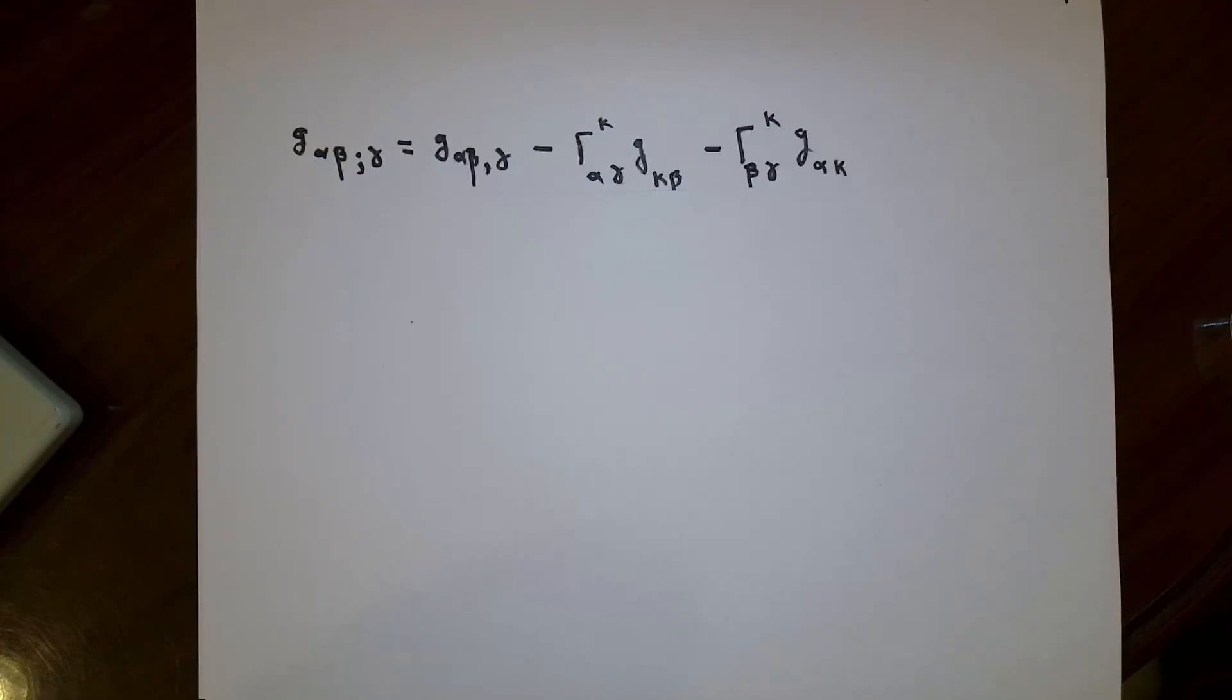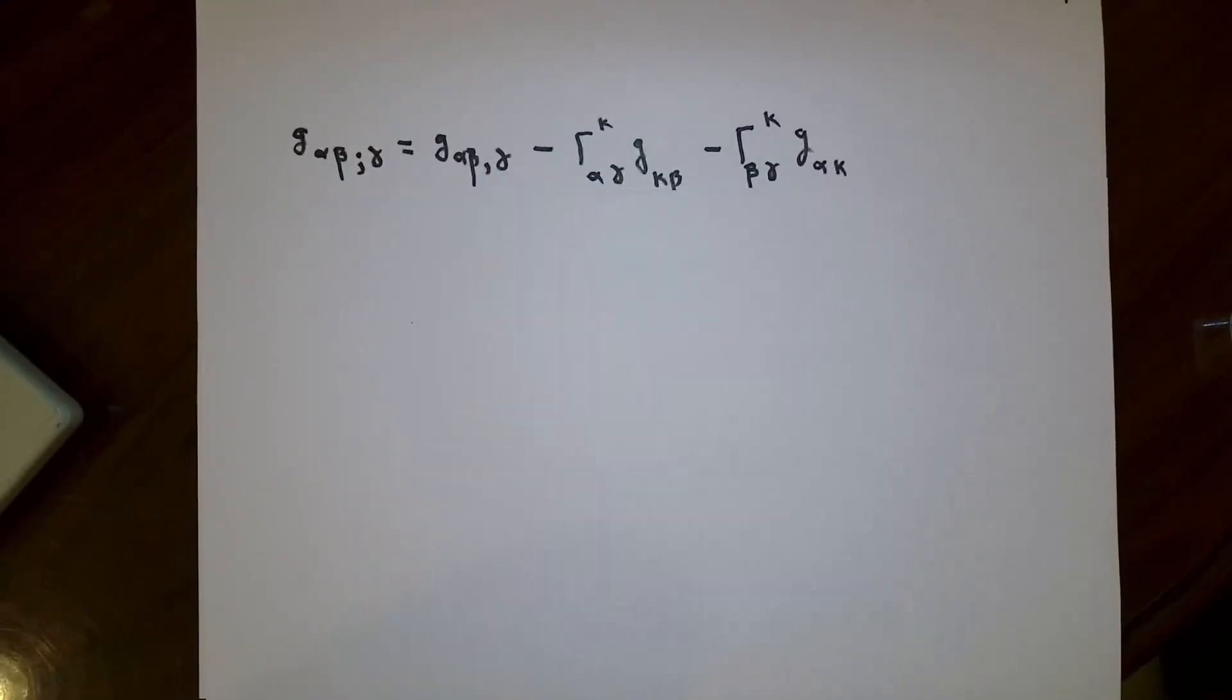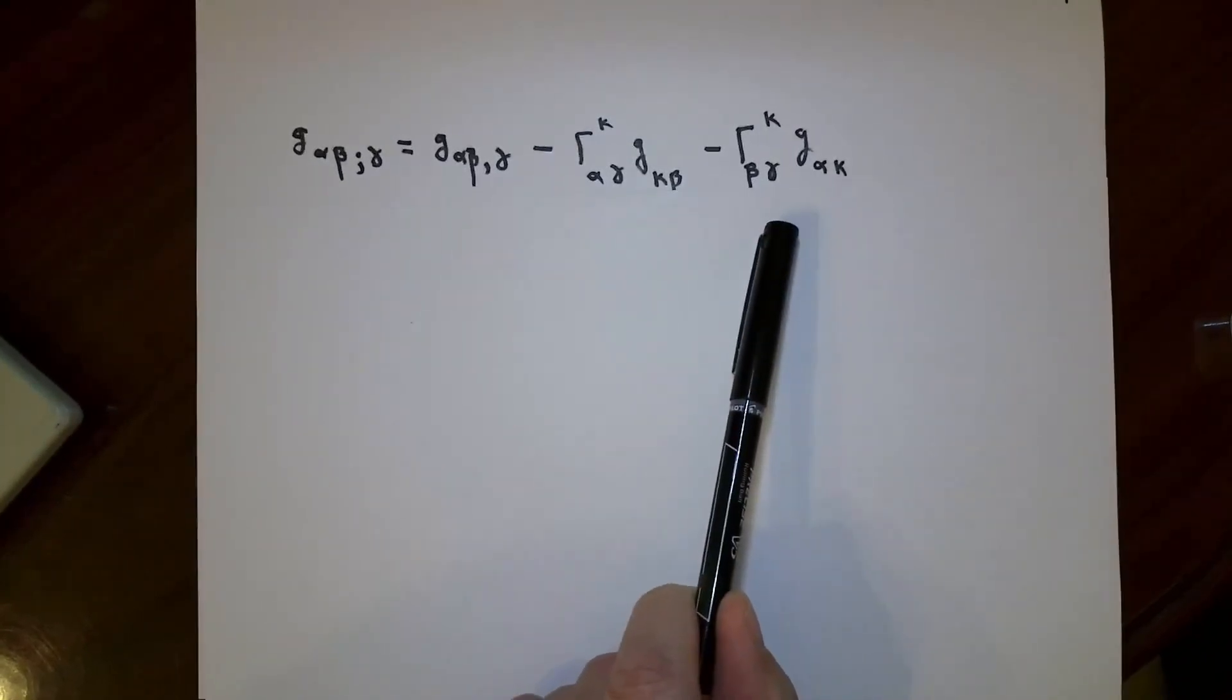Good morning. In a previous video, we figured out how to get the components of the covariant derivative of a 0,2 tensor. We figured out that component number alpha, beta, gamma of the covariant derivative is just the ordinary partial derivative, and then to take into account the fact that the basis vectors and basis one-forms are not necessarily constant, we figured out that there would be additional terms involved.